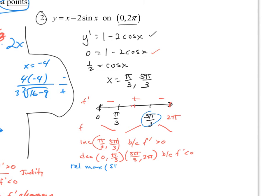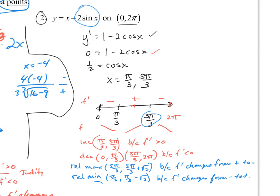The relative max is at x equals five pi over three; the y-coordinate is five pi over three plus the square root of three, found by plugging back into the original function. This is because f prime changes from positive to negative. The relative min is at x equals pi over three, with its y-value calculated similarly, because f prime changes from negative to positive. Write f prime explicitly — not just 'the derivative' — to be clear about which function you mean.